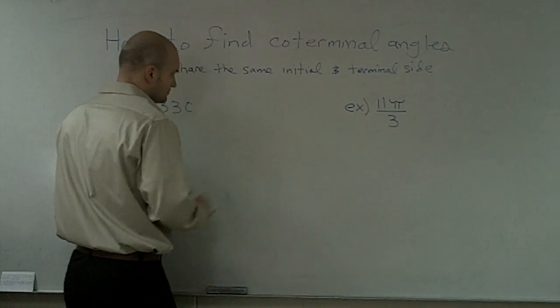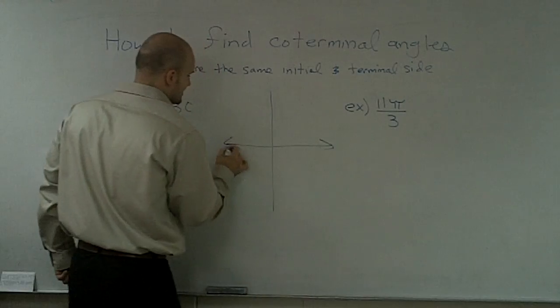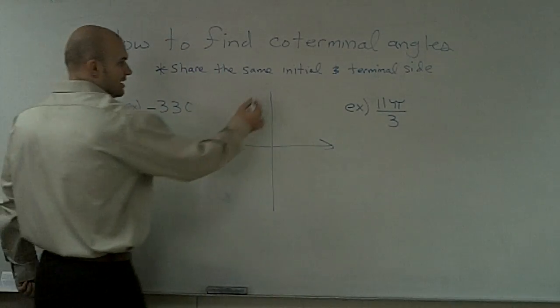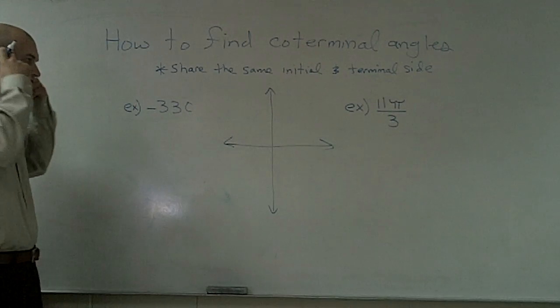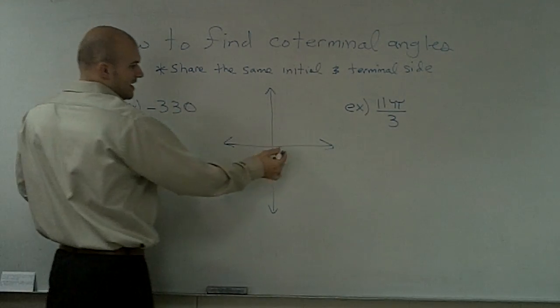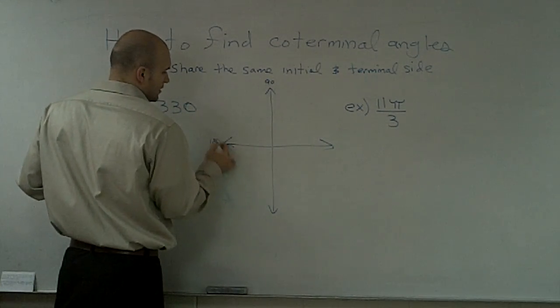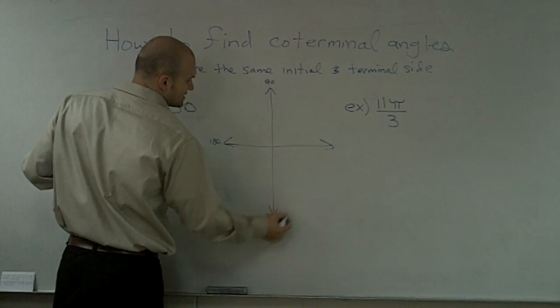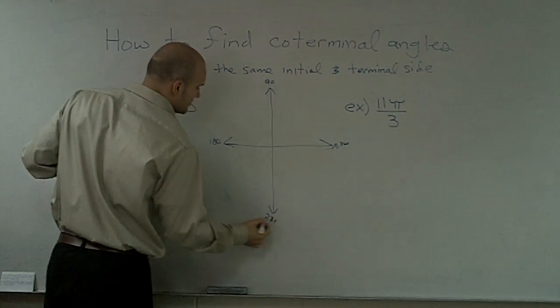The best way that I like to complete these is there's an algebraic and a graphical way. I'm a very visual person, so I always like to have a graph. Real quick, we know on a graph that here's your 90, 180, 270, 0, and 360.